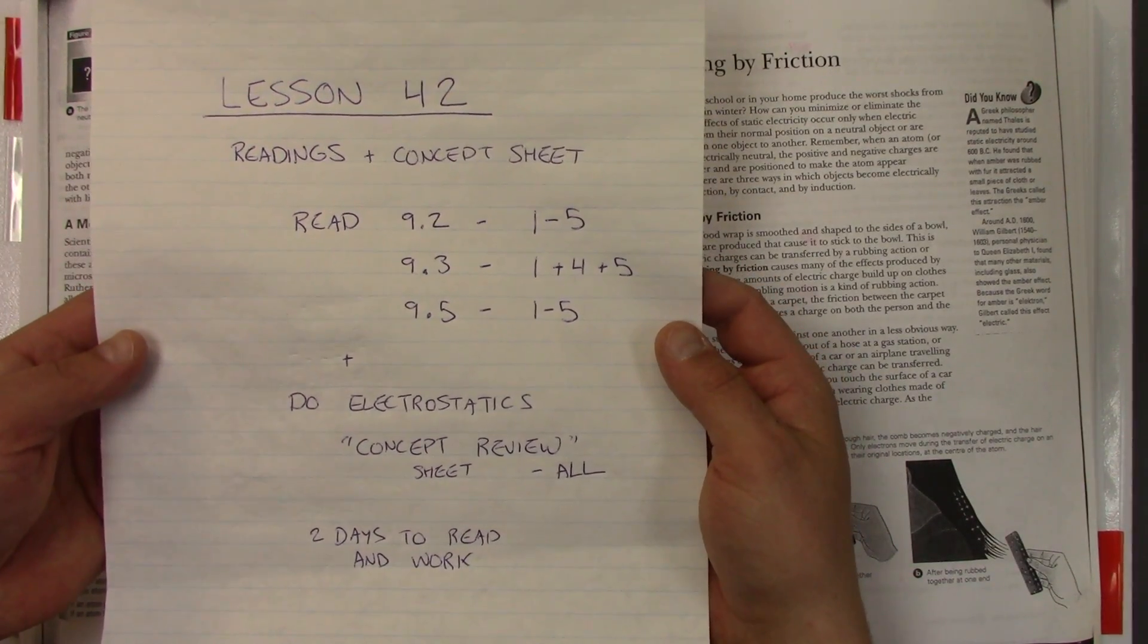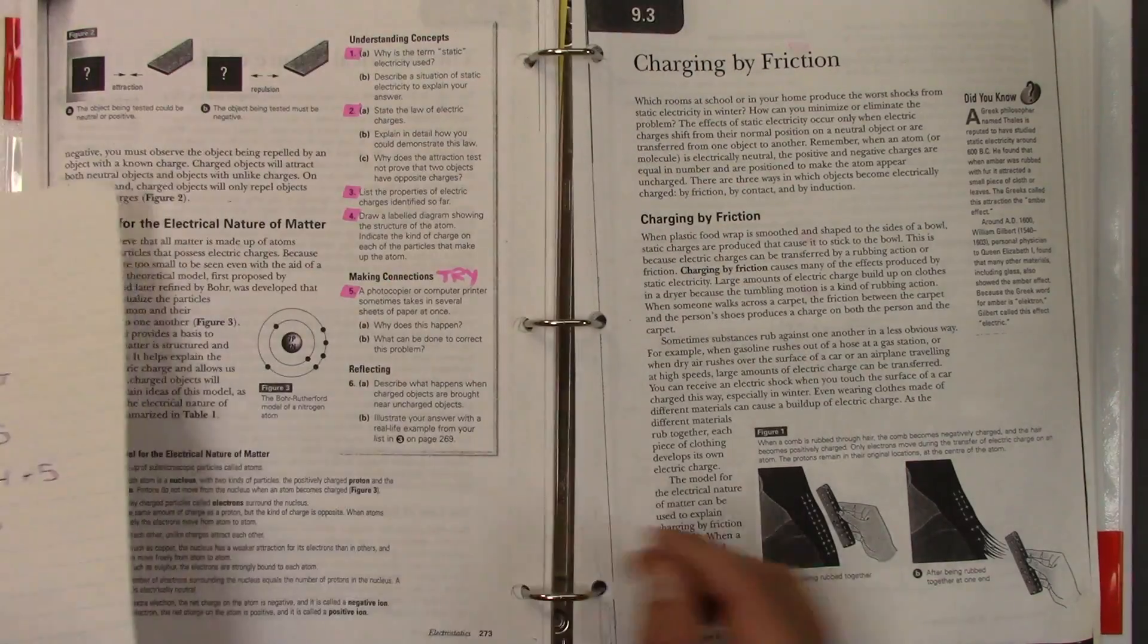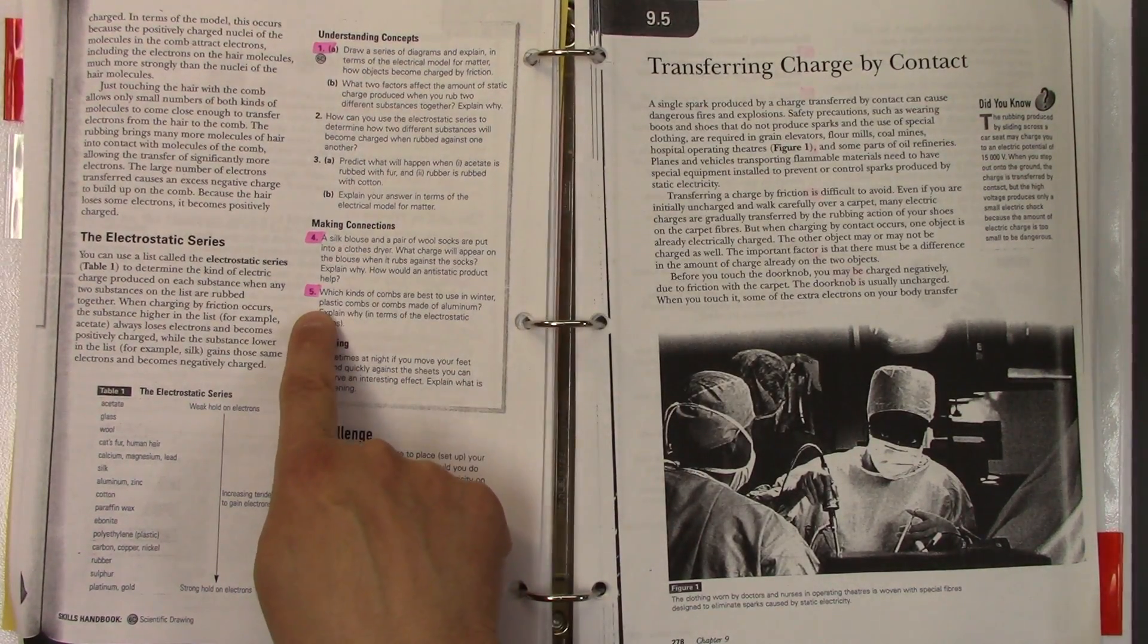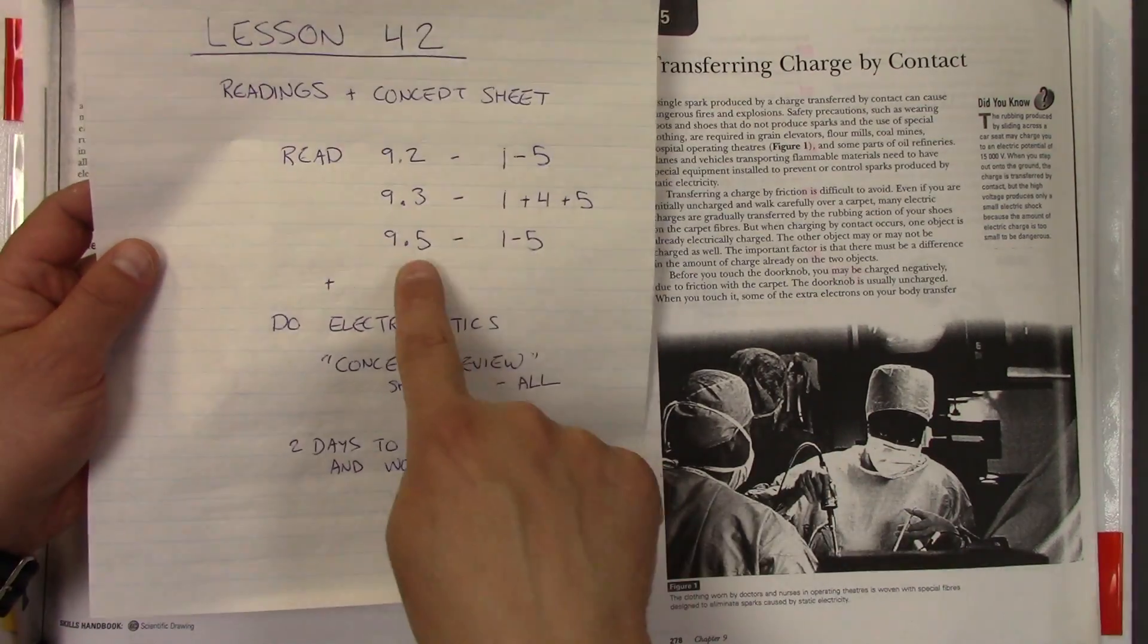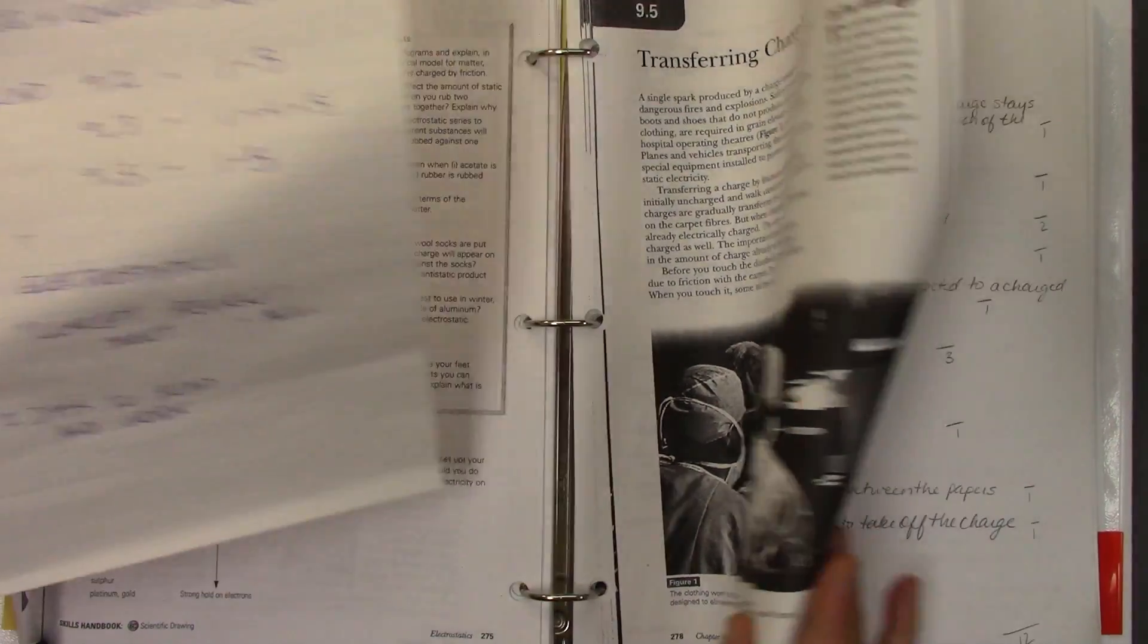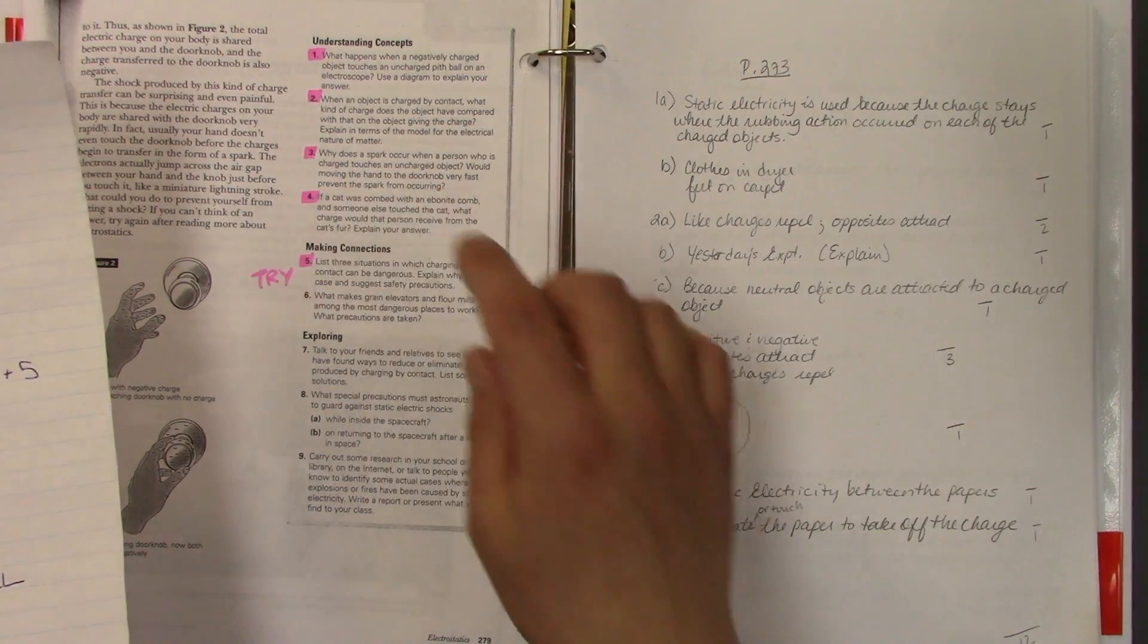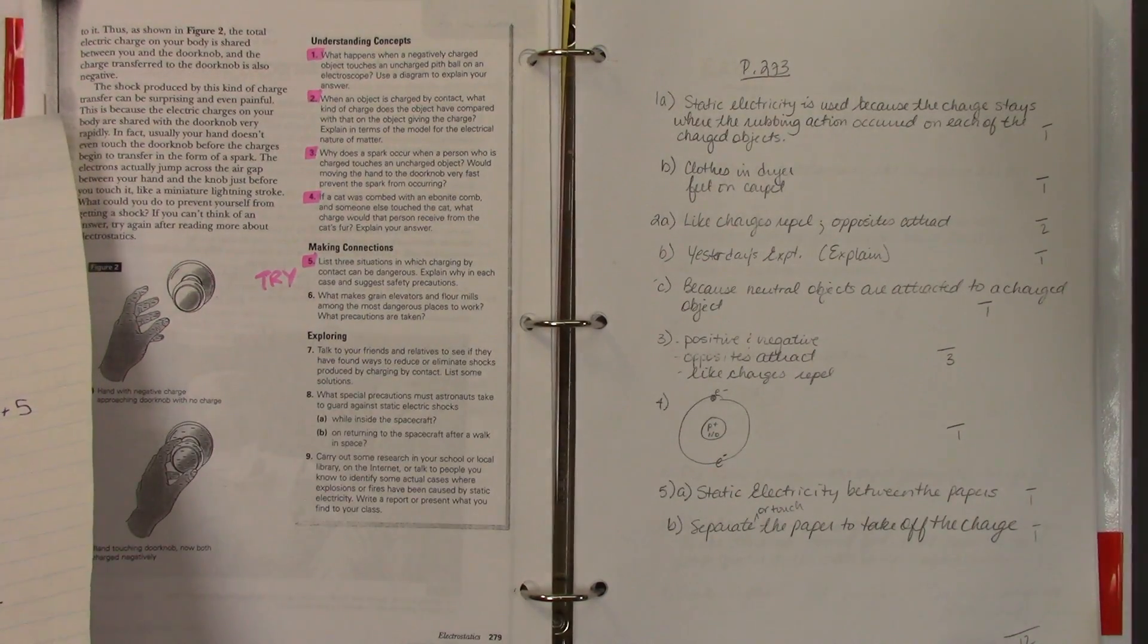Then you're going to move on to 9-3, and you're going to do 1-4-5. So 9-3, charging by friction, 1-4-5. Then you will read 9-5, and you can try 1-2-3-4-5. 5 is a tricky one, but you can give that a try.